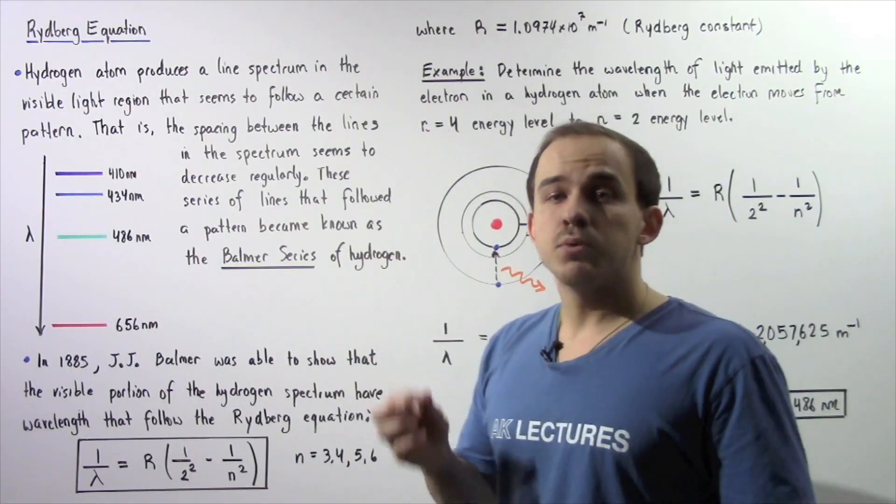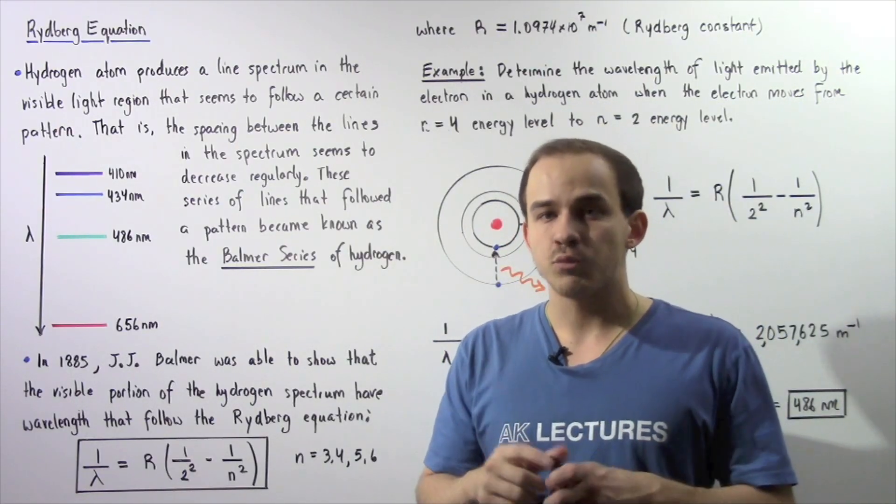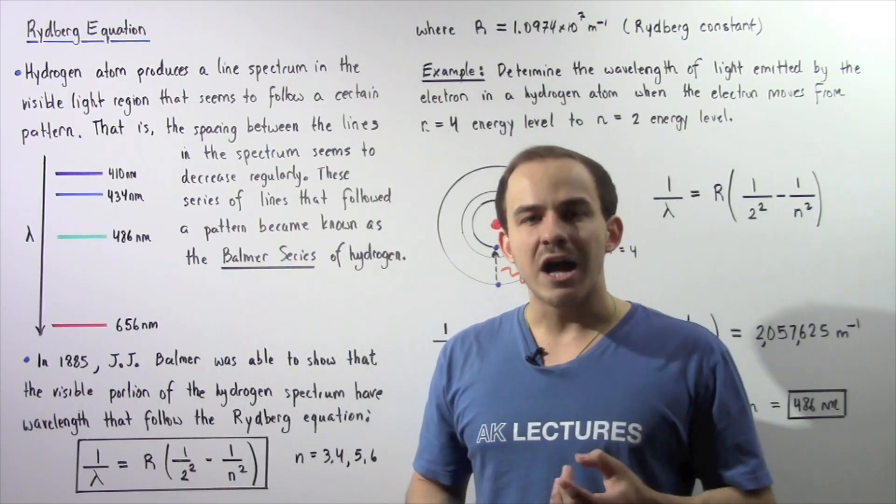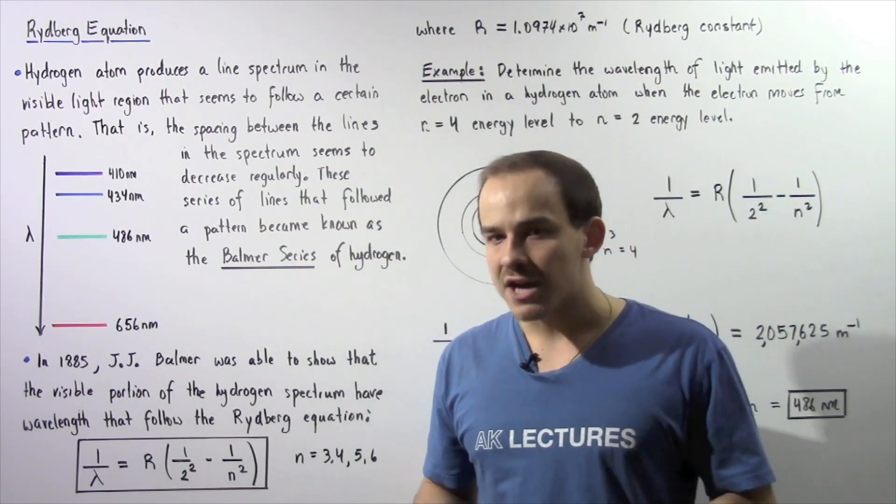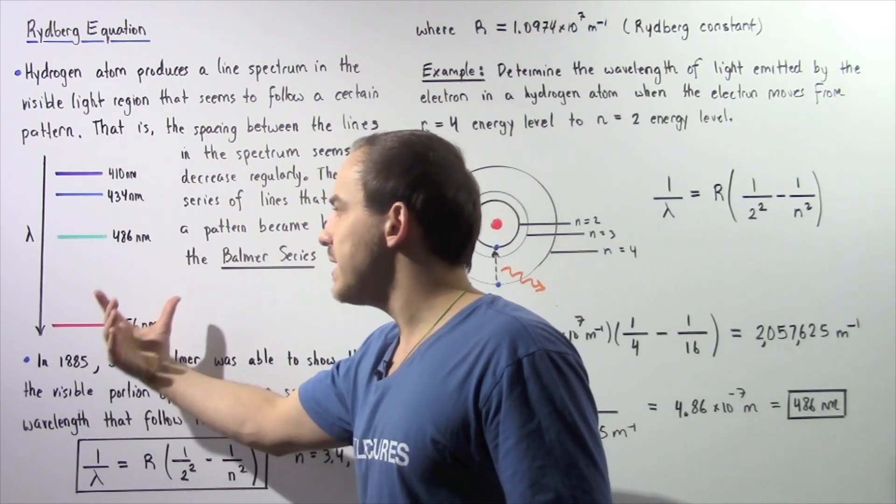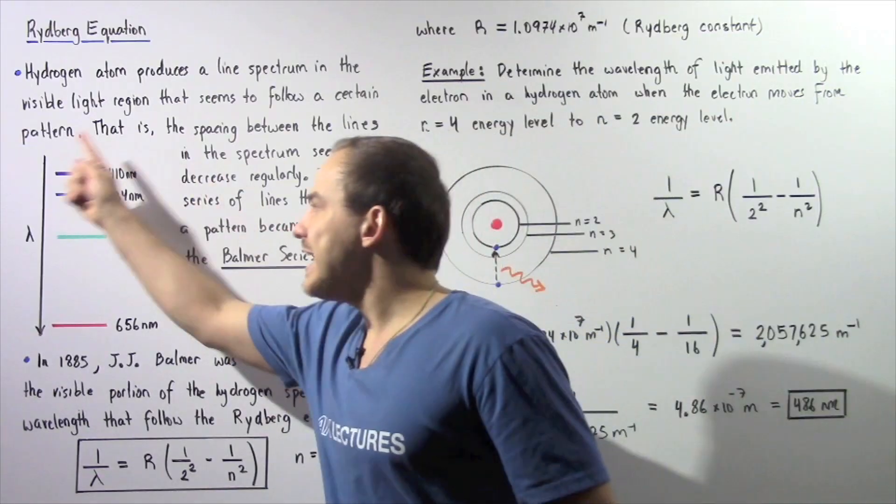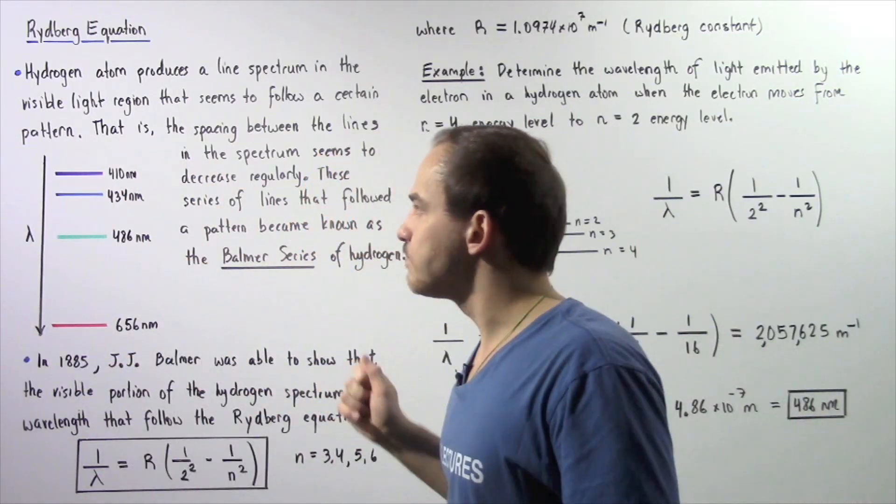And the hydrogen atom produces a discrete line spectrum in the visible light region that seems to follow some type of pattern. So let's examine the following diagram. This basically describes the line spectrum of the hydrogen atom in the visible light region.